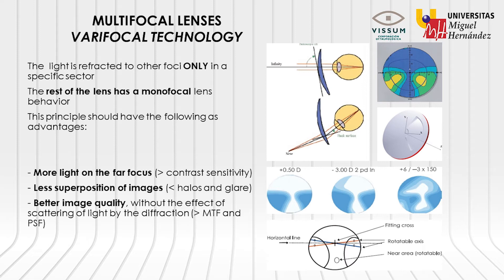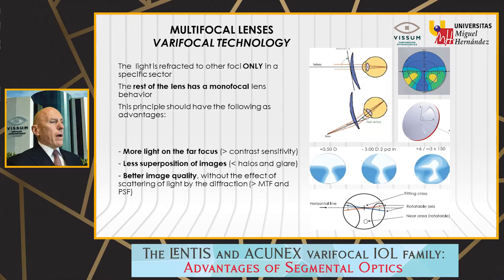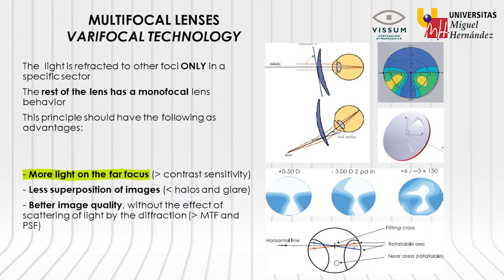On the contrary, with sectoral varifocal technologies, you have a very important advantage: most of the lens is monofocal, because only one third of the lens is focusing for near, and this sector is the only one in which light is used for this purpose. We have more light for the far focus, which actually increases contrast sensitivity. These lenses do not affect contrast sensitivity and don't cause loss of function. You have less superimposition of images with minimal halos and glare, and with the 1.5 model, basically no halos and no glare, because there is no superimposition of images. As a consequence, you have better image quality without the scattering of light caused by diffraction.